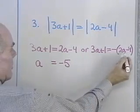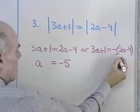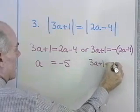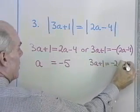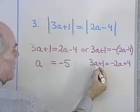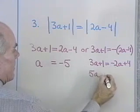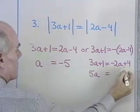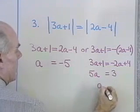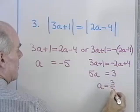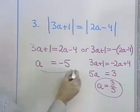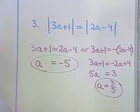Over here, I'll have to remove these absolute value symbols. So I have 3a plus 1 is equal to negative 2a plus 4. I'll add 2a to both sides and get 5a, and I'll add negative 1 to both sides and get 3. Divide both sides by 5: a is equal to 3 fifths. So I have two solutions: a is equal to negative 5, and a is equal to 3 fifths.